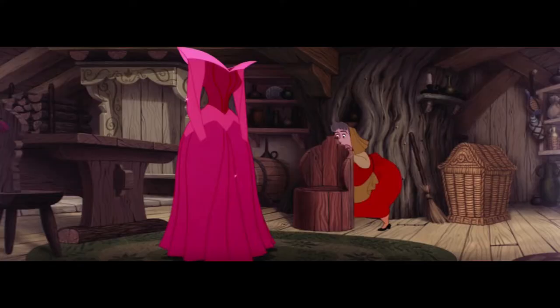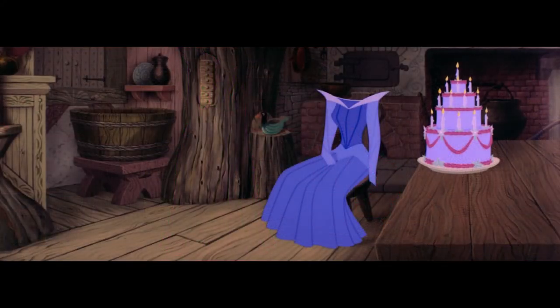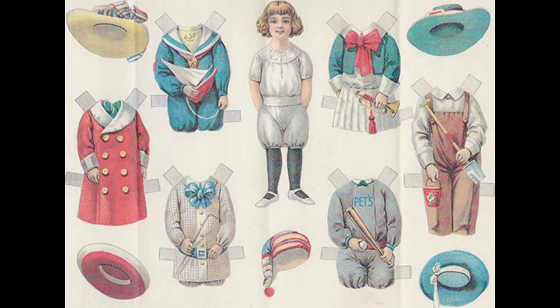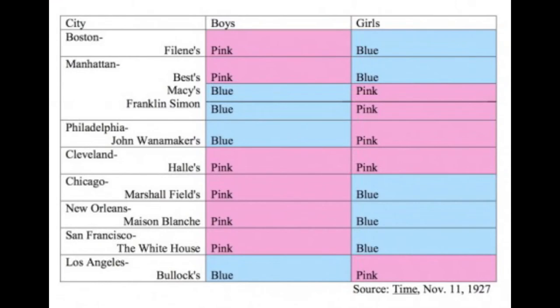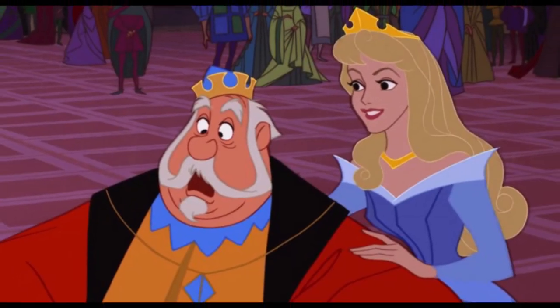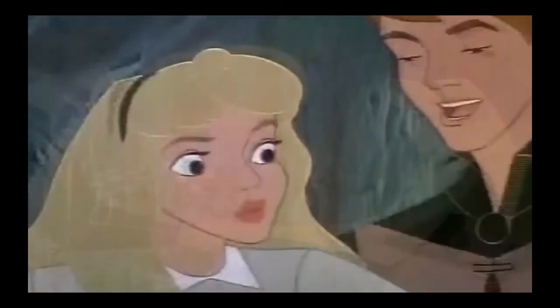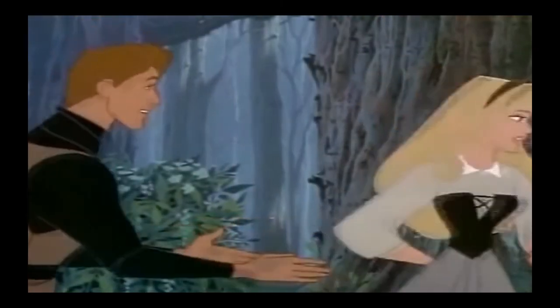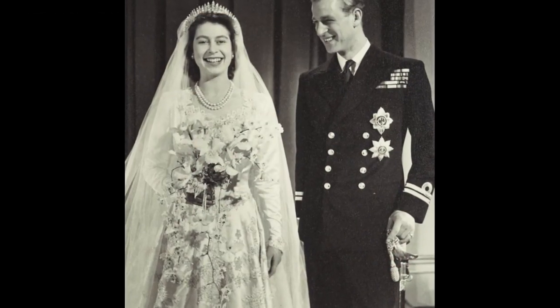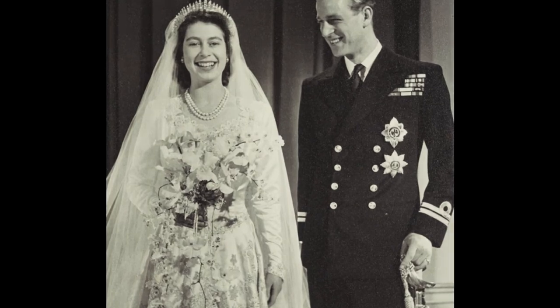Aurora's ball gown switches from pink to blue throughout the film, during a time when the stereotypical colours associated with the gender of a baby were beginning to change. Before this time, blue was generally considered a girl's colour and pink a boy's. Princess Aurora has only about 18 lines of actual dialogue throughout the entire film, in which she only appears for 18 minutes. The Prince is named after Prince Philip, the Duke of Edinburgh, and husband of Queen Elizabeth II.